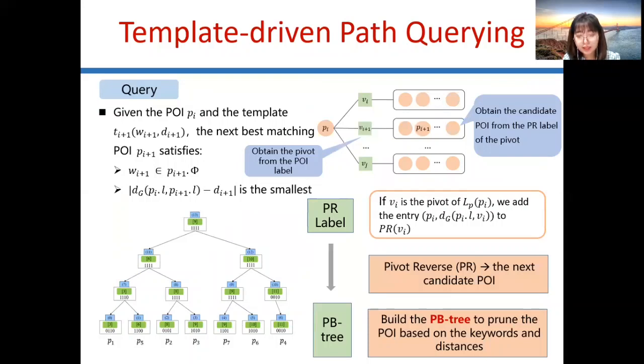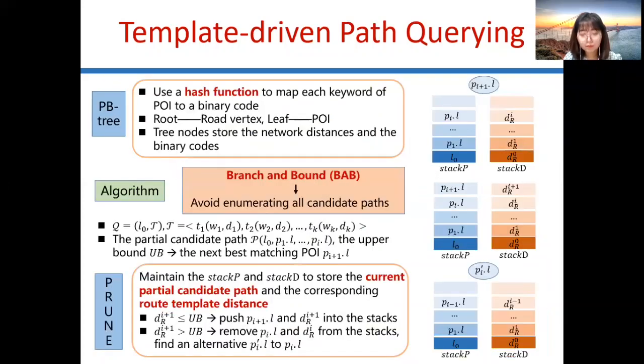To determine the next candidate POI, we construct a pivot reverse label. If VI is the pivot of the POI label of VJ, we add the entry to PR label of VI. Based on the PR label, we build PBTree to prune the POIs. PBTree uses a hashing function to map each POI keyword to a binary code. The root node is the vertex of the road network, and leaf is POI. Tree nodes store the network distance and binary codes.